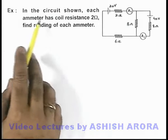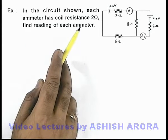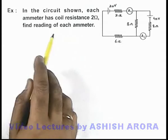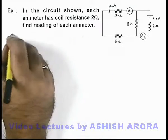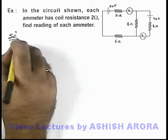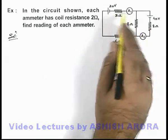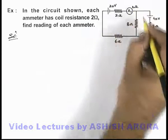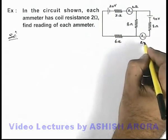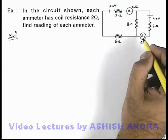In this example, we are given that in the circuit shown, each ammeter has a coil resistance of 2 ohms, and we are required to find the reading of each ammeter. In the circuit you can see there are 2 ammeters connected. As the ammeters are connected in series with these branches, we can directly state the resistance of each ammeter, 2 ohms, will be considered in series combination with the branches.